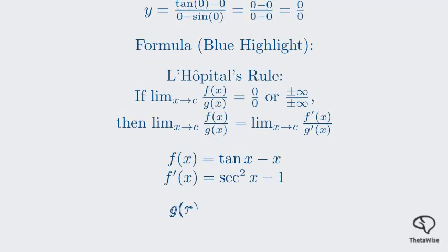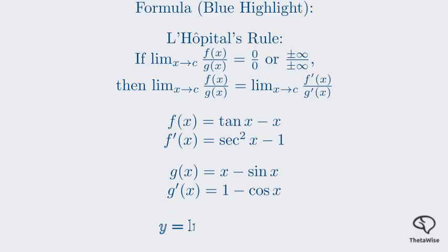The denominator is g(x) equals x minus sin x. The derivative of x is 1, and the derivative of negative sin x is negative cos x. So the derivative g'(x) is 1 minus cos x. Now let's substitute these derivatives back into our limit. The new limit is the limit as x approaches 0 of secant squared x minus 1, all divided by 1 minus cos x.